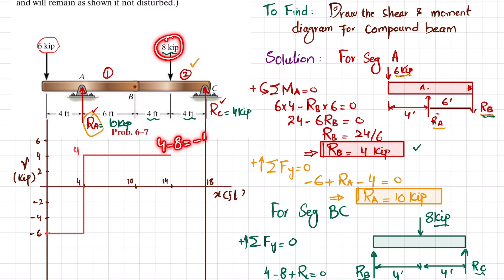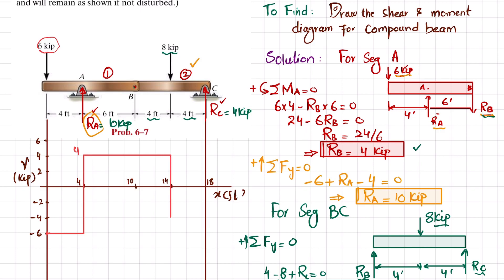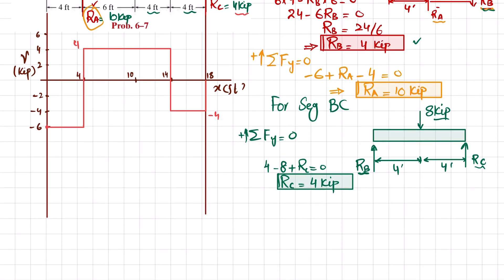At the 8 kip load: +4 − 8 = −4, so the shear force changes from +4 to −4. From the 8 kip load to point C there is no change, so shear remains horizontal at −4. At point C, RC = +4 brings the shear back to zero. This completes the shear force diagram.